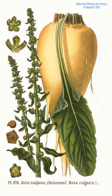A sugar beet is a plant whose root contains a high concentration of sucrose and which is grown commercially for sugar production. In plant breeding it is known as the Altissima cultivar group of the common beet. Together with other beet cultivars, such as beetroot and chard, it belongs to the subspecies Beta vulgaris subsp. vulgaris.